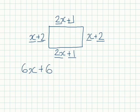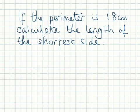So I now have the expression for the perimeter which is 6x plus 6. The final part of one of these questions quite often involves solving an equation. Here we are told the perimeter is 18cm. We know the expression for our rectangle for the perimeter is 6x plus 6 but we are now being told it equals 18.